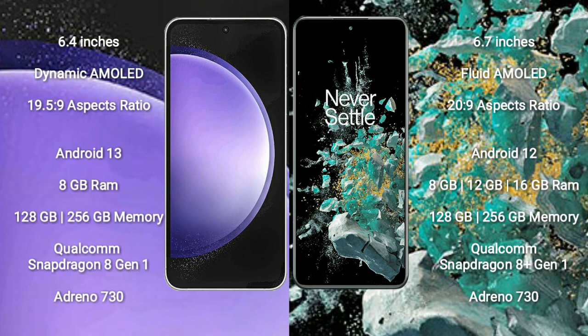Samsung Galaxy S23 FE runs on the Android 13 operating system. OnePlus 10T runs on the Android 12 operating system. Samsung Galaxy S23 FE comes with 8GB RAM, 128GB to 256GB internal storage, Qualcomm Snapdragon 8 Gen 1 Processor, and GPU Adreno 730.